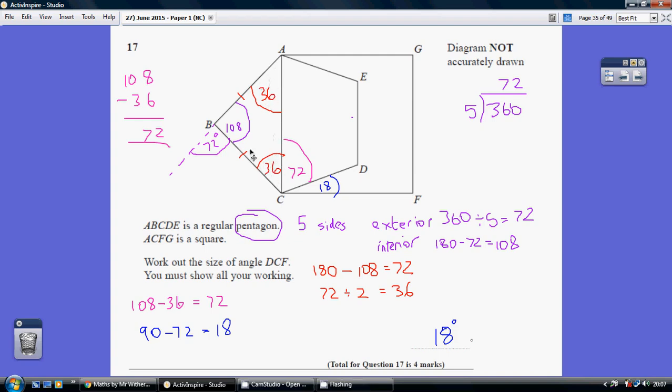Now back to this angle here, the angle BCD. Well that is another internal angle inside the pentagon. So we know it's another 108. So this angle here, angle ACD, this pink one is 108, take away 36, which is yet another 72.